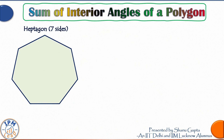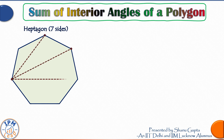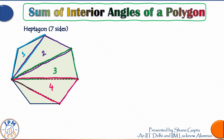It's not possible every time to draw a figure. Suppose they ask you the angle sum for a 13-sided figure — you would have a tough time drawing it, let alone partitioning it into triangles. So we need a general formula for a polygon of n sides. Let us derive it using a heptagon, a seven-sided figure. We pick any one vertex and draw all possible diagonals from it. How many triangles are formed? One, two, three, four, and five — five triangles.